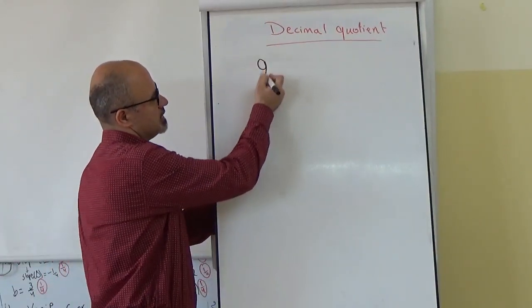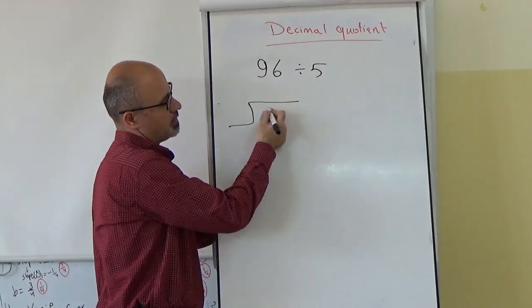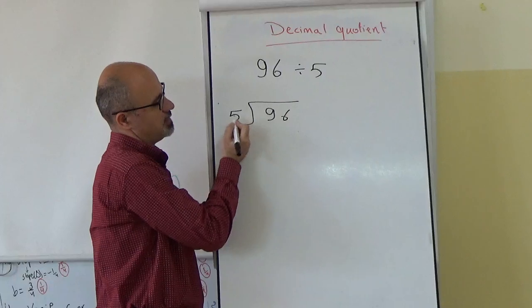Suppose we have 96 divided by 5. So, let's make it in this way. 96 divided by 5. Let's divide it.